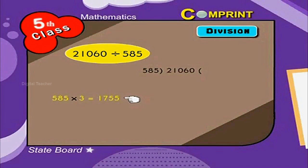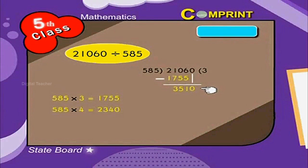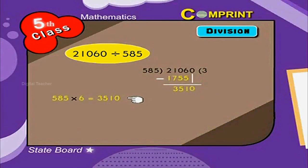585 into 3 is equal to 1755. 585 into 4 is equal to 2340. So 2106 can be divided 3 times by 585. Now let us subtract 1755 from 2106. The difference is 351. Now let us take 0 beside 351. Now the number is 3510. Let us multiply once again: 585 into 6 is equal to 3510.